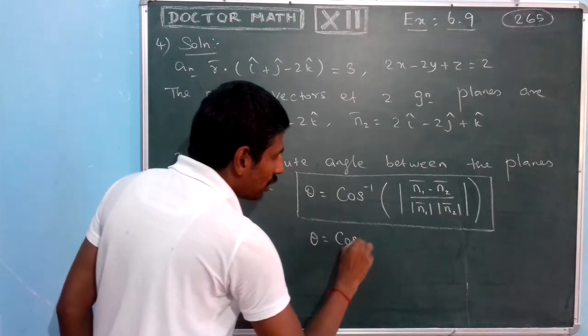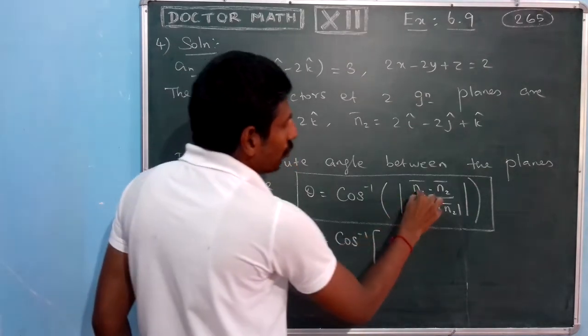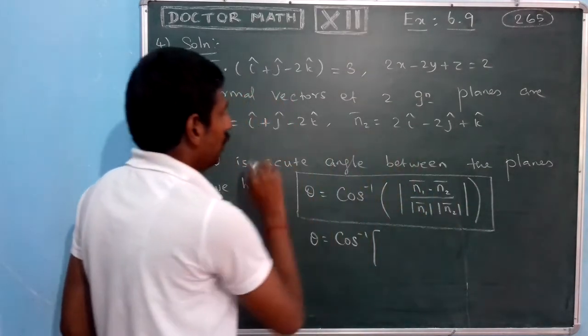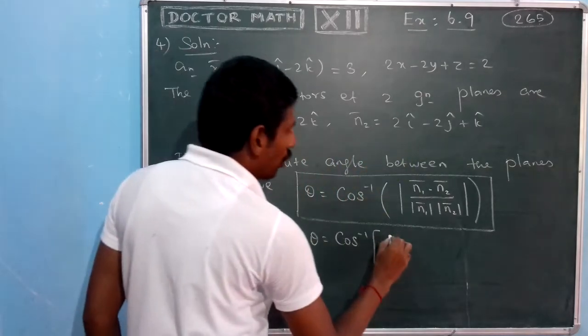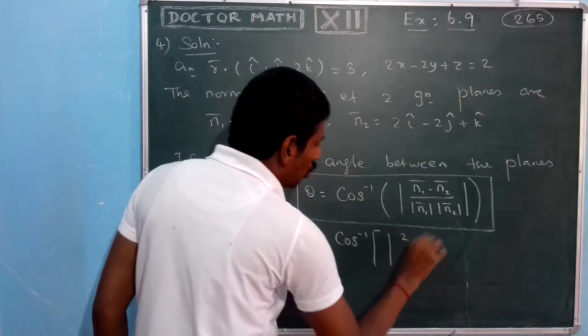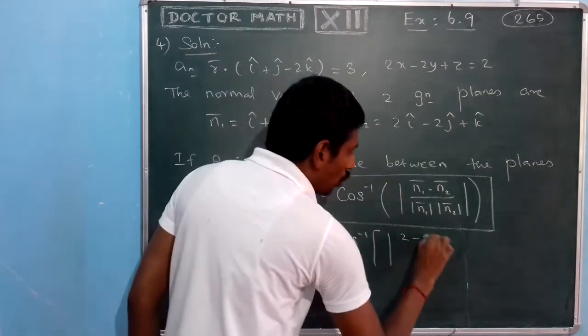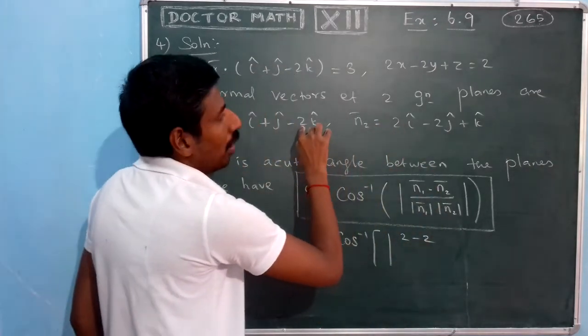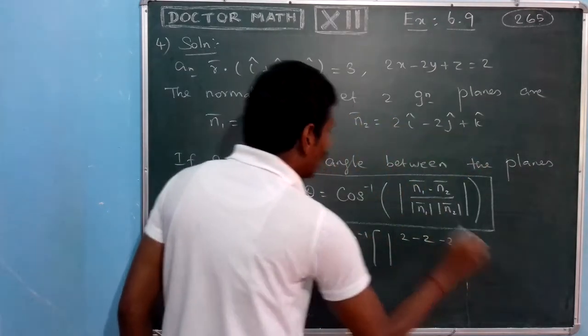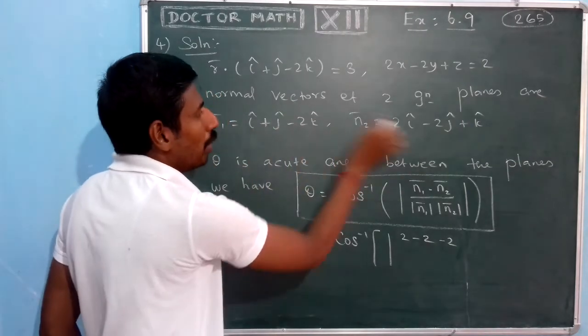So we answer the cos inverse of N1 vector dot N2 vector. Now we have the dot product. Now we have 2 minus 2 minus 2.